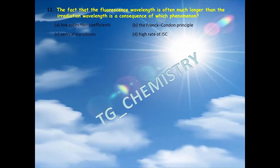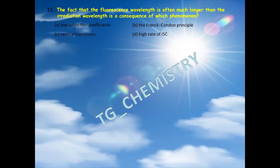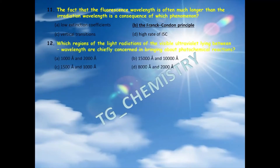Eleventh question: the fact that the fluorescence wavelength is often much longer than the irradiation wavelength is a consequence of which phenomenon? Options: A) low extinction coefficients, B) the Franck-Condon principle, C) vertical transitions, D) high rate of intersystem crossing. The Franck-Condon principle states that electronic transitions occur much faster than nuclei can respond, making option B the right answer.